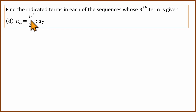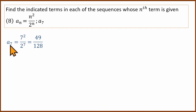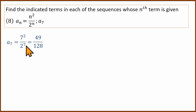The next question: aₙ = n² divided by 2 power n. We need to find A₇. Substituting n = 7: 7 squared in the numerator and 2 power 7 in the denominator gives 49 divided by 128.